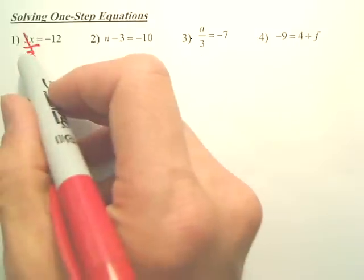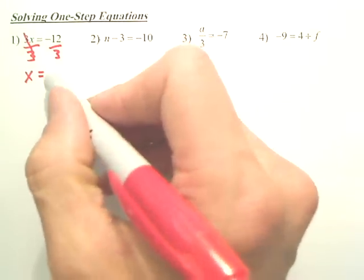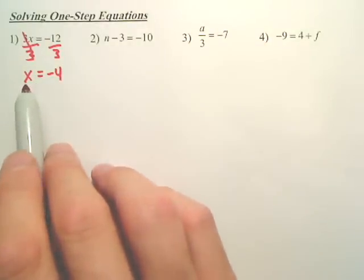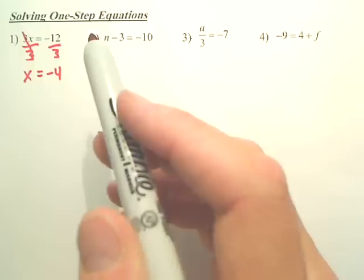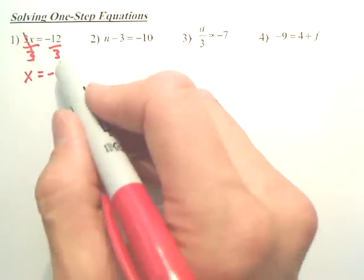But if I divide by 3 over here, I also have to go over here and divide by 3 as well. And that gives me negative 4. And all of a sudden, I have x by itself equals negative 4. The answer just appears, which we talked about earlier. 3 times negative 4 is negative 12. It's that easy.